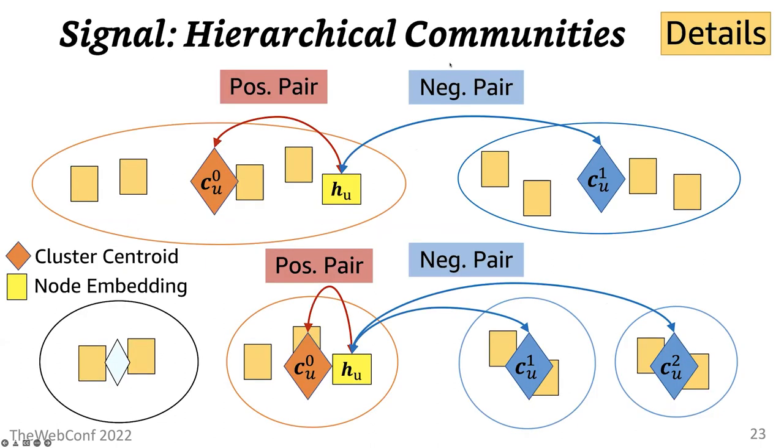Then for contrastive learning using this signal on hierarchical community, we take the centroid of the cluster that the anchor node U belongs to. So this is the anchor node, and this is the centroid of the cluster that this anchor node belongs to. We take this cluster centroid to be the positive sample, and negative samples are randomly selected from among the other remaining cluster centroid vectors. So note that these anchor nodes are contrasted, not with other individual nodes, but with cluster centroid vectors.